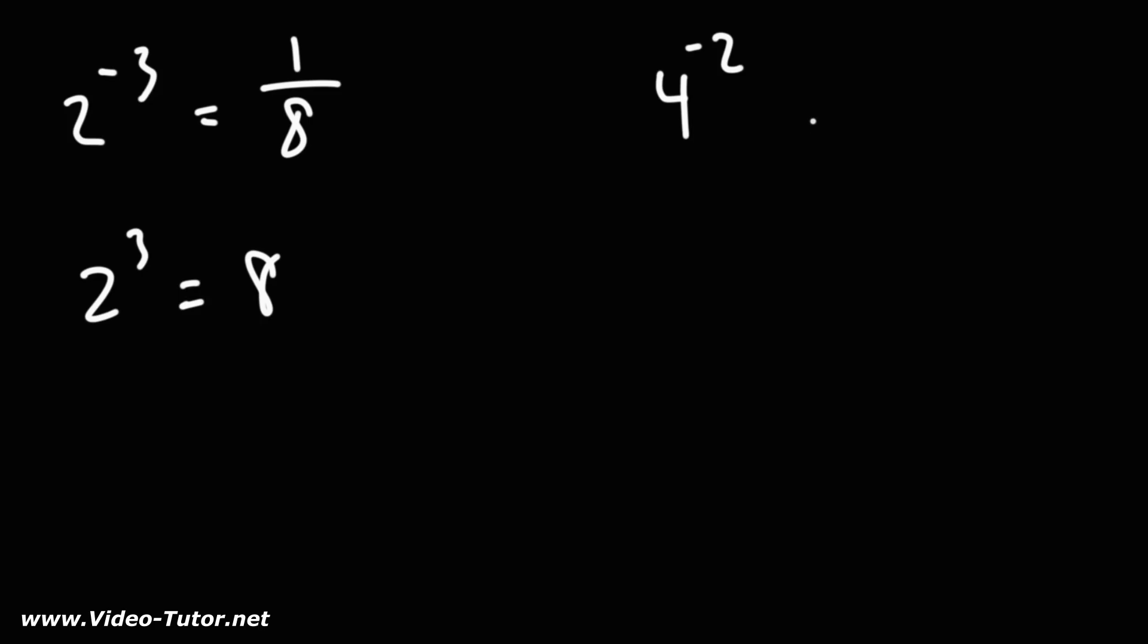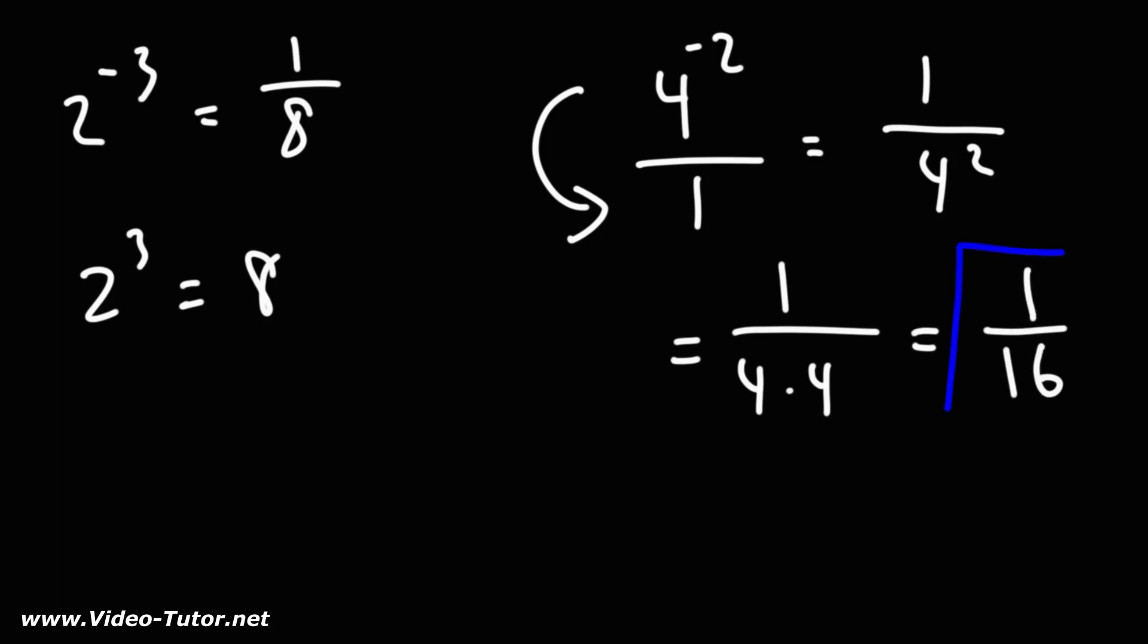Now what about 4 to the negative 2? Well, let's move the 4 to the bottom of the fraction. This is equivalent to 1 over 4 squared. 4 squared is 4 times 4. 4 times 4 is 16. So 4 to the negative 2 is 1 over 16.